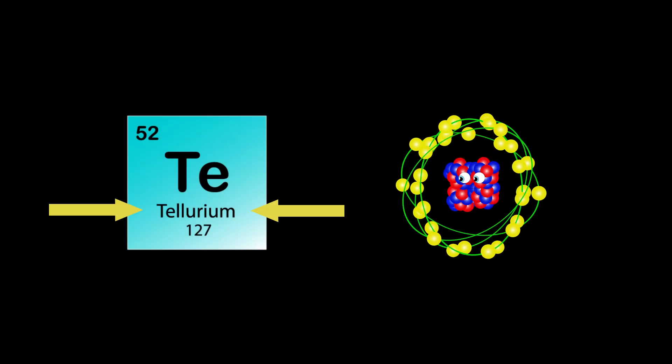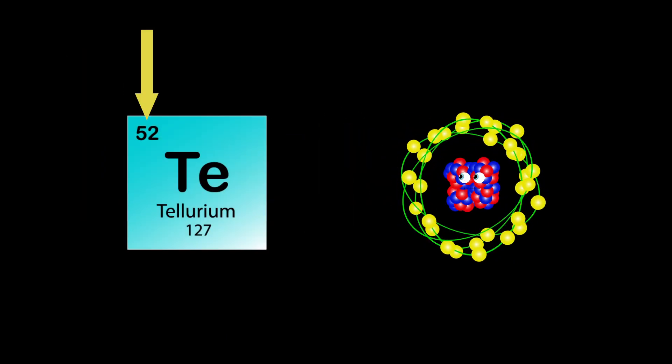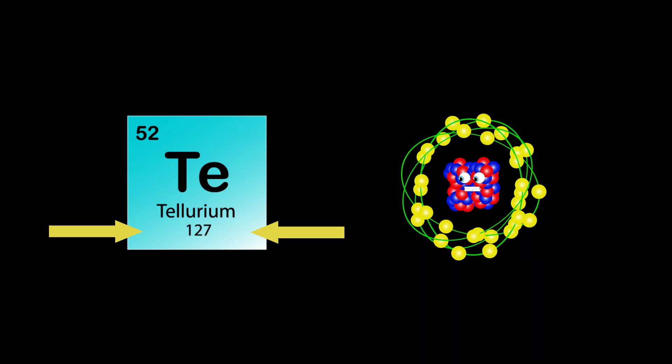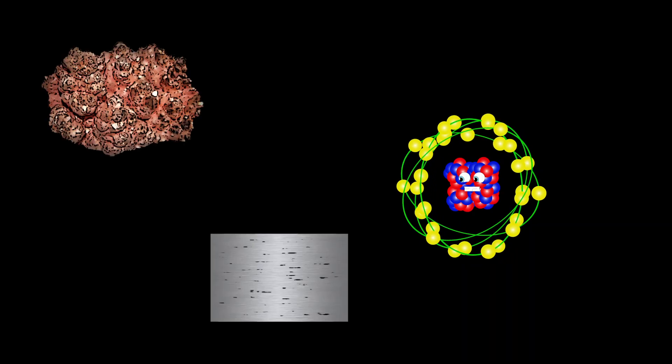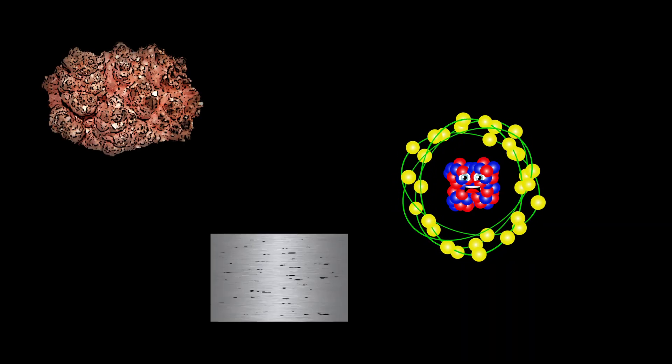I am Tellurium, my atomic number is 52. My atomic mass is 127, Te is my symbol, true. I'm used in alloys mostly with copper and stainless steel. I improve their machinability, it's part of my deal.